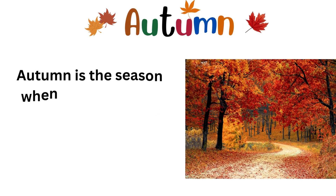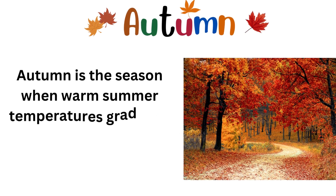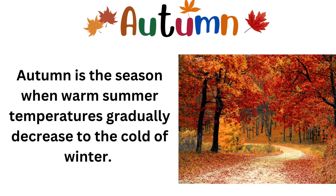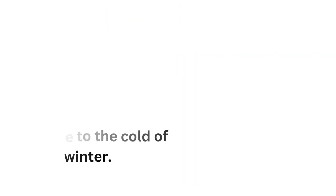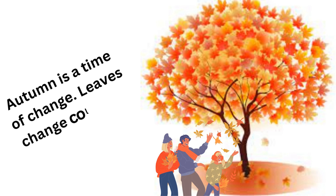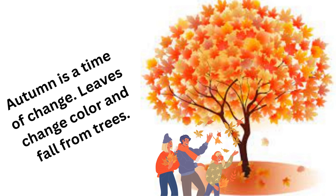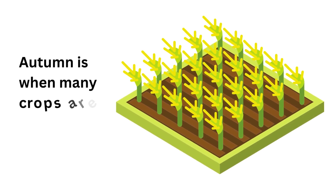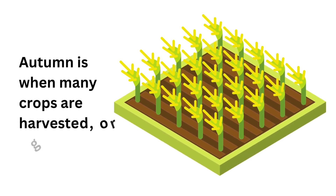Autumn is the season when warm summer temperatures gradually decrease to the cold of winter. Autumn is a time of change — leaves change color and fall from trees. Autumn is also when many crops are harvested, or gathered.